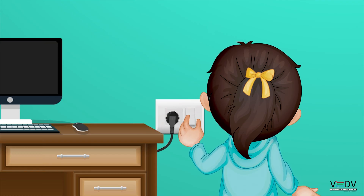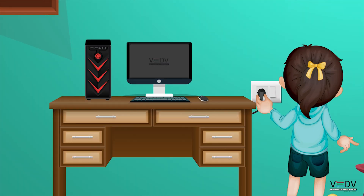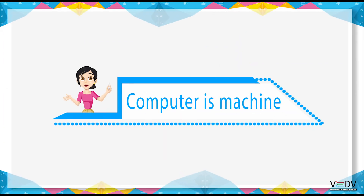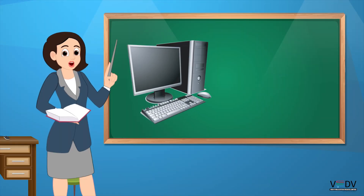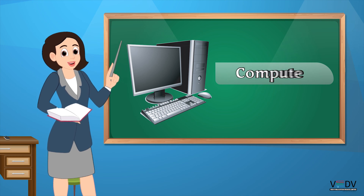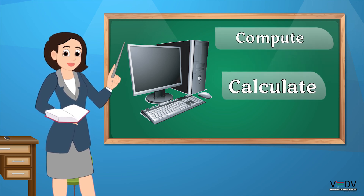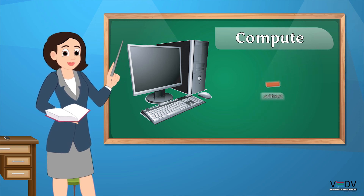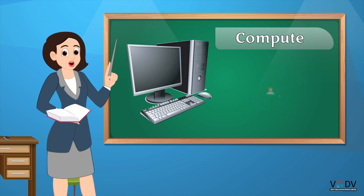Computer is an electronic machine. It runs on electricity. It can do many things. The name computer comes from the word 'compute.' Compute means to calculate. So, computer can add, subtract, multiply and divide.